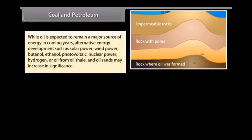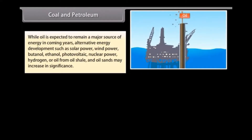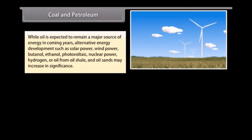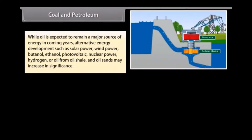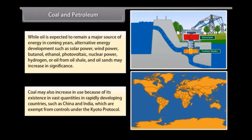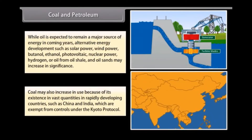While oil is expected to remain a major source of energy in coming years, alternative energy development such as solar power, wind power, butanol, ethanol, photovoltaic, nuclear power, hydrogen, and oil from oil shale and oil sands may increase in significance. Coal may also increase in use because of its existence in vast quantities in rapidly developing countries such as China and India, which are exempt from controls under the Kyoto Protocol.